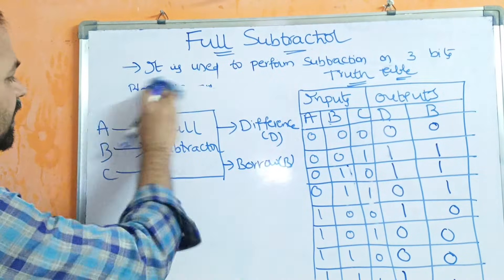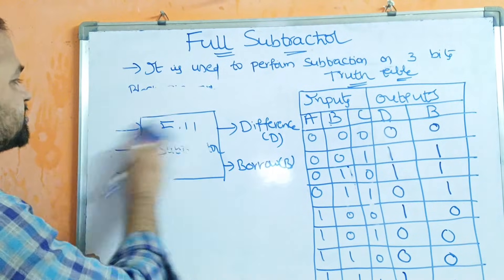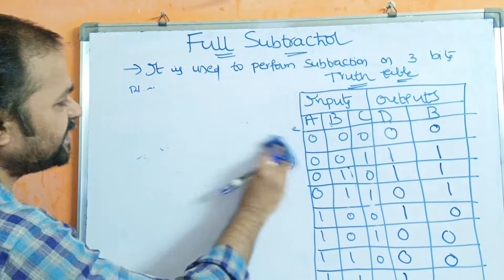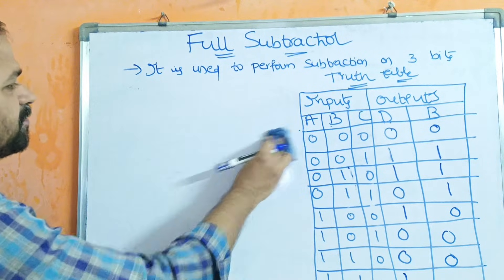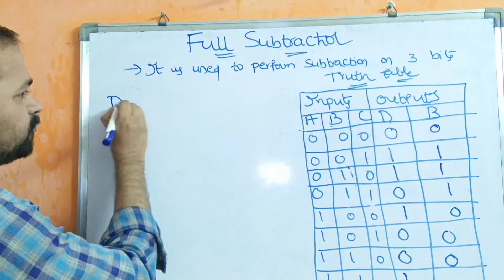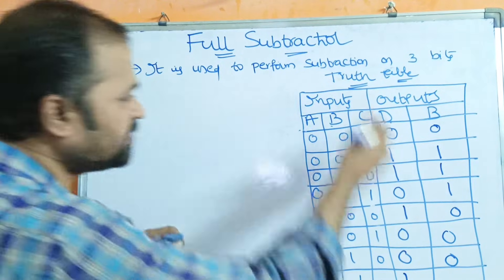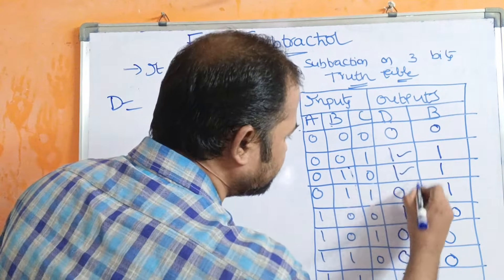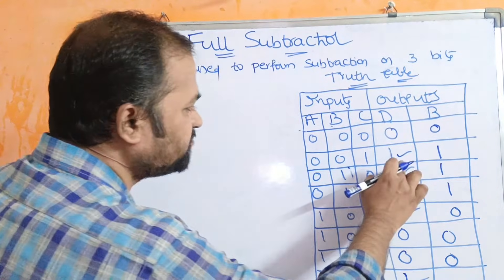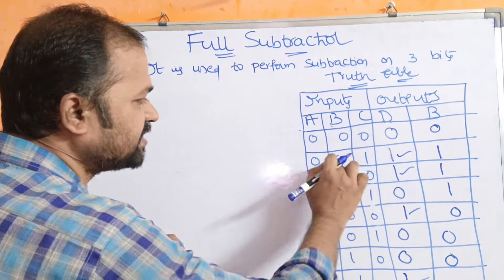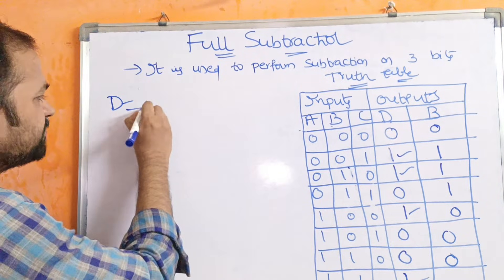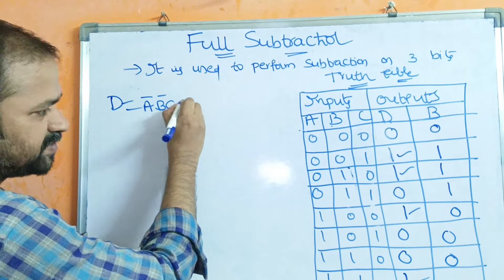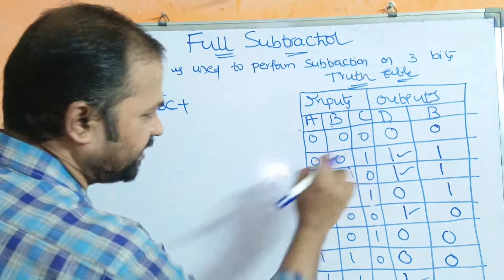Now we have to evaluate the expressions for difference and borrow. Let us observe the difference column — we have 4 ones. The first one corresponds to combination 0,0,1 which can be written as A-bar, B-bar, C.